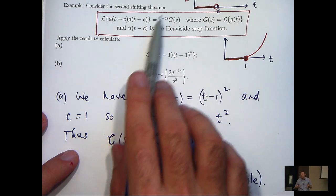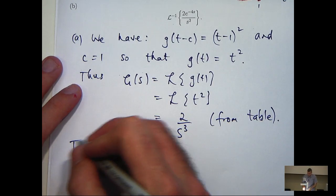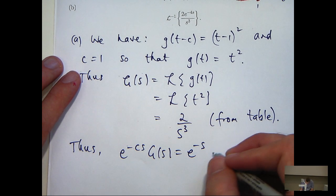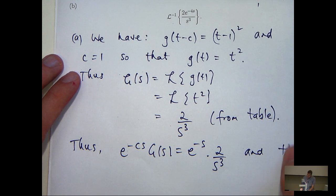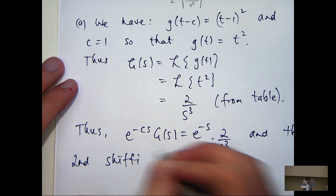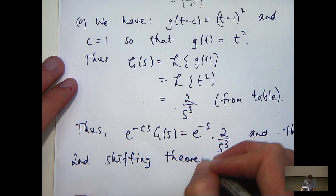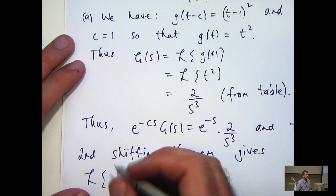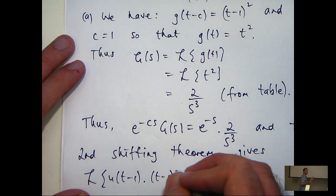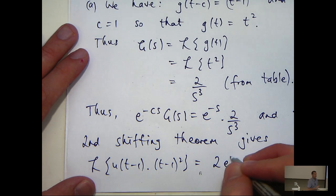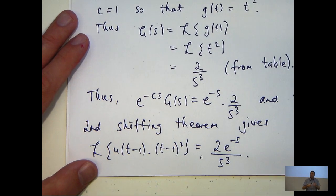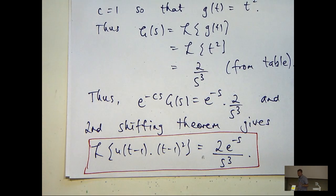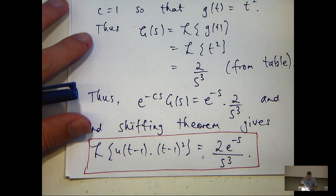Okay, so let's now form this right-hand side and apply the second shifting theorem. So c equals 1. Okay, so the Laplace transform of this. This is just what we've calculated here. So you can see that I've clearly identified the theorem that I'm using, and we've solved that part of the question.